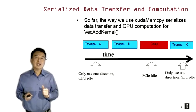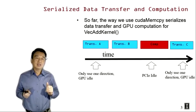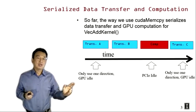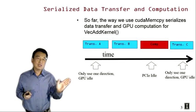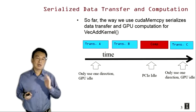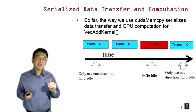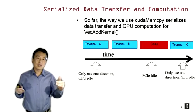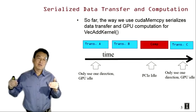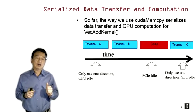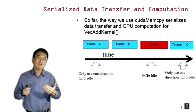When we look at the current design, we can roughly divide the execution time into three components. The first component is transferring vectors A and B from host to device, or from CPU to GPU. During this time, only one direction of the system interconnect — the PCI Express bus — is used: the host-to-device direction. It turns out that PCI buses can actually do simultaneous transfer in both directions; you can have data transferring from host to device while also transferring from device to host. So we're only using one direction of that bus.